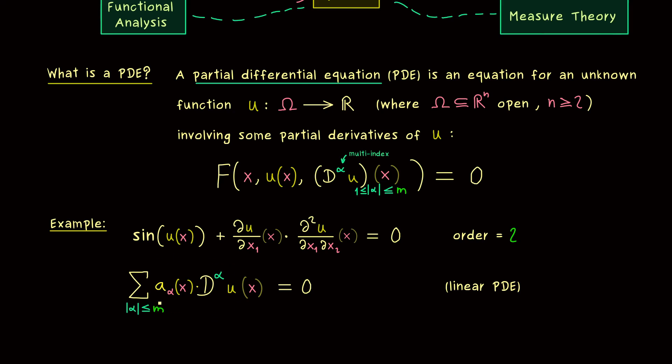Moreover, this is actually what we would call a homogeneous linear PDE, so we can also make it inhomogeneous. Which means we could have a function f on the right as well. Obviously for the general description we could just subtract this to still have a zero on the right hand side.